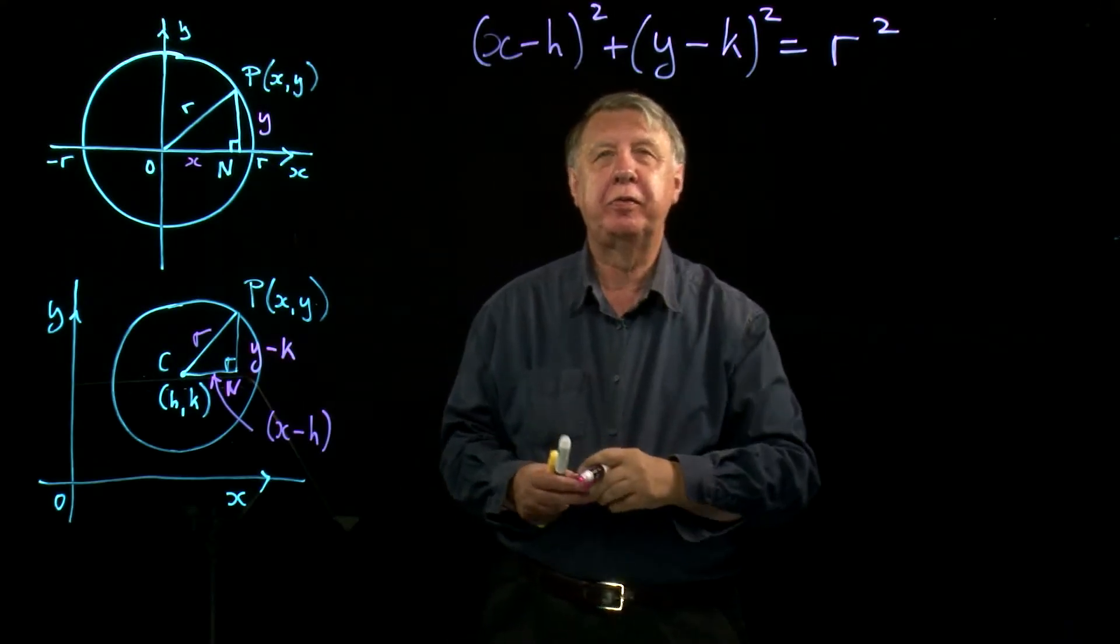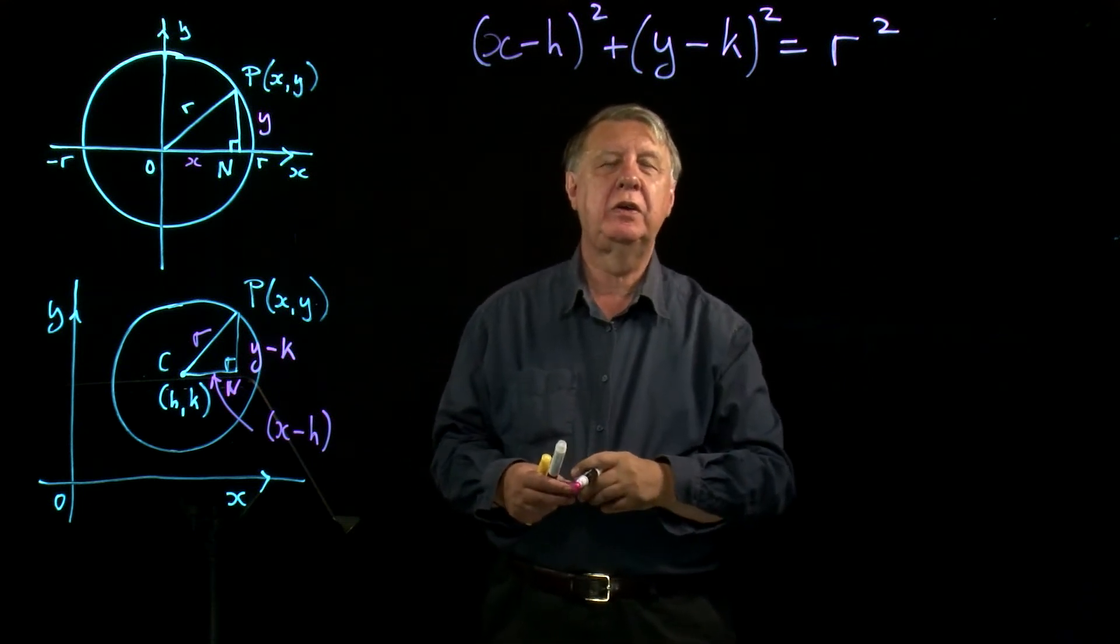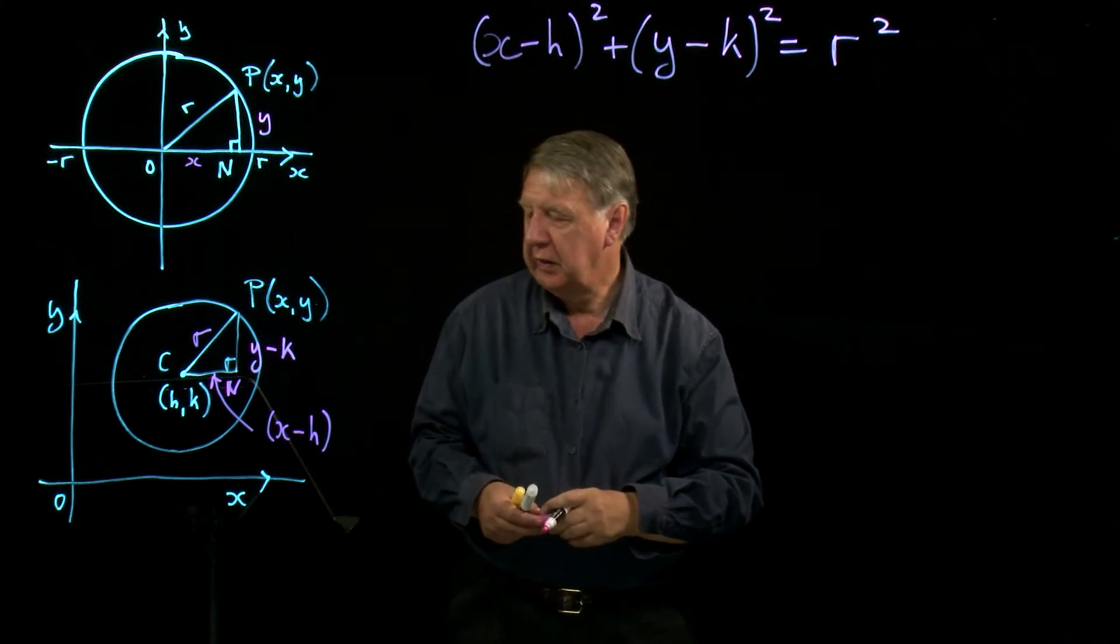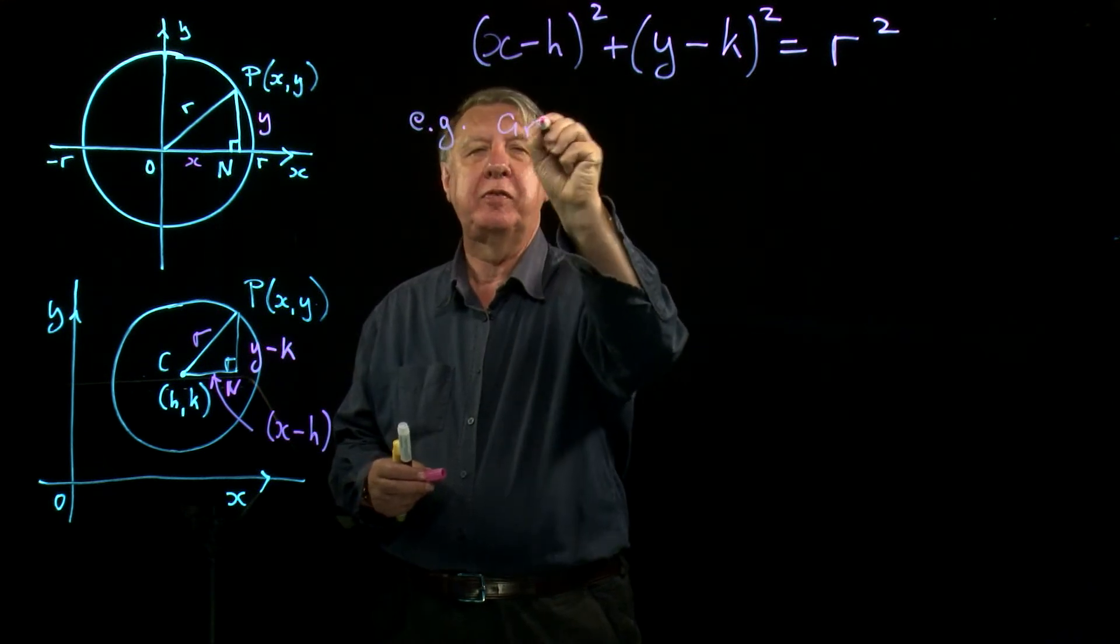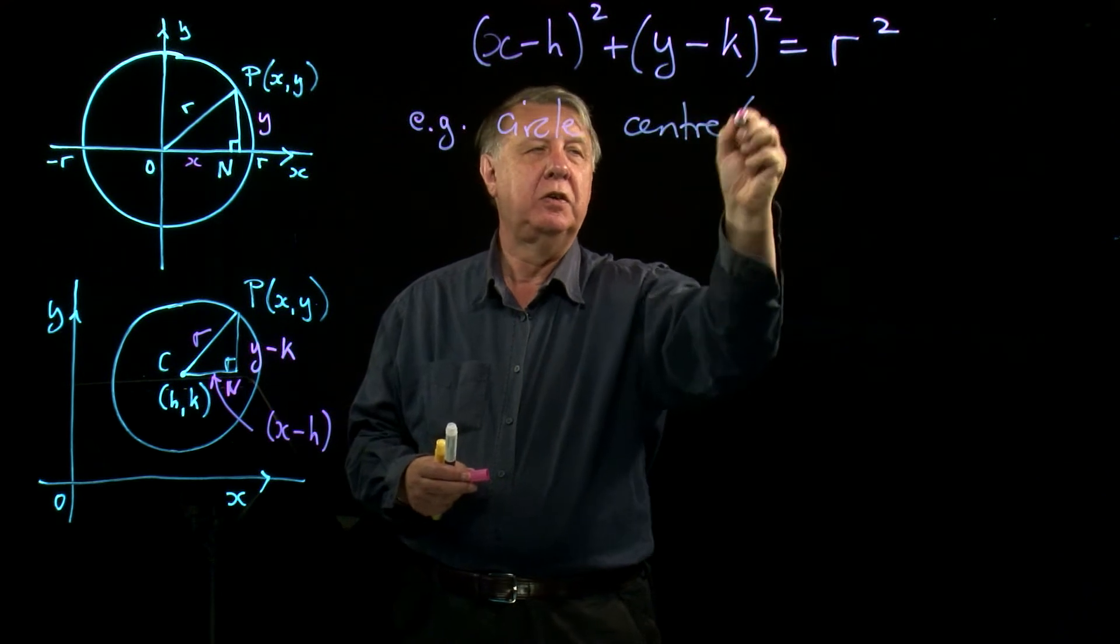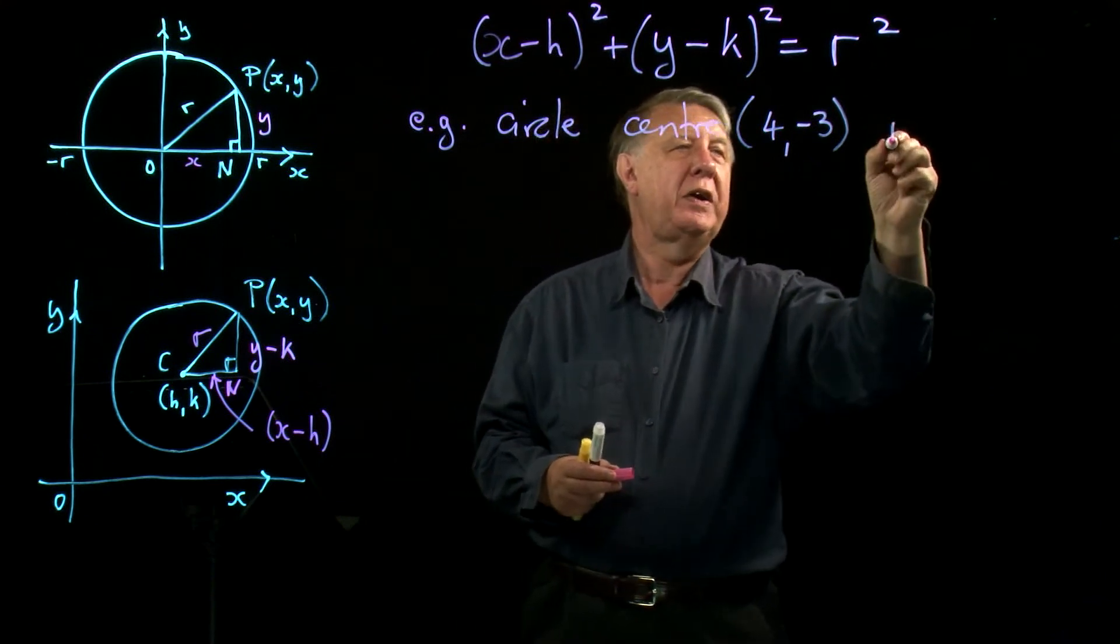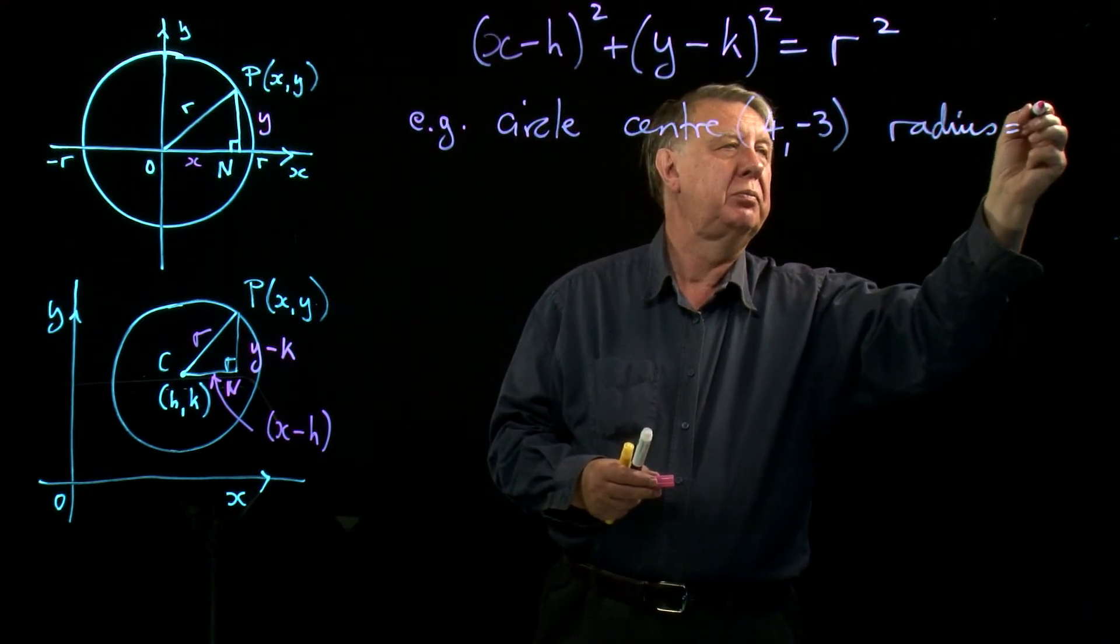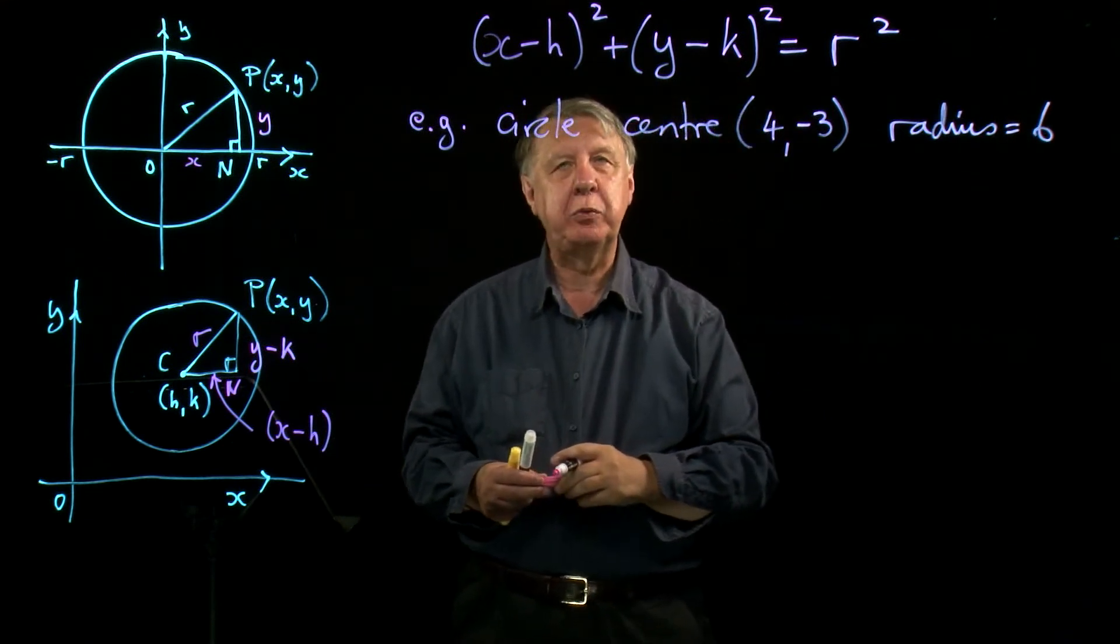So transferred this formula to the top of the board to give me some more space. Now let's have a look at using that formula. So if we wanted to find the equation of a circle, for example suppose we wanted to find a circle, and the center was at the point 4, negative 3, and the radius was equal to, I don't know, 6.